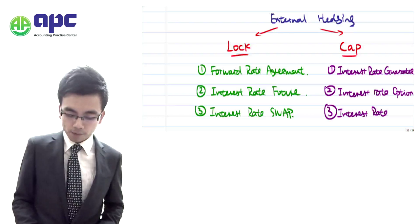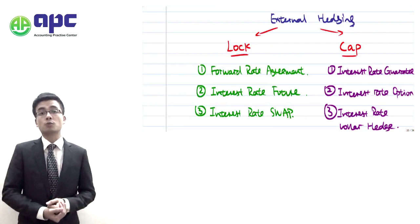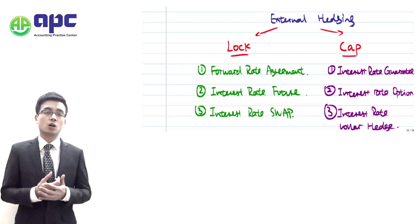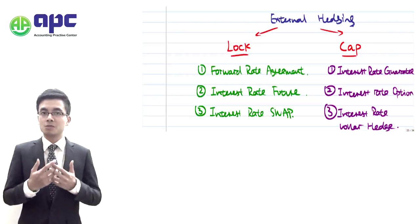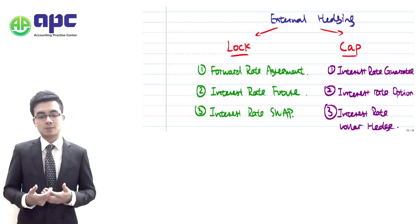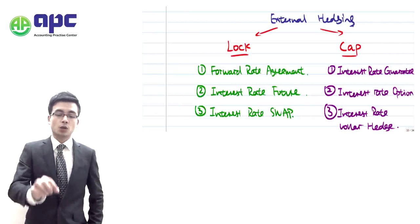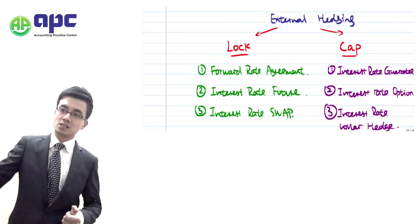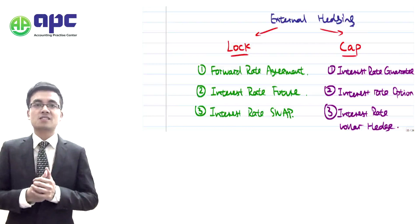Finally, we have the interest rate collar hedge, which is based on the interest rate options contract. With a regular options contract you pay a premium, which can be expensive. With the collar hedge, instead of just paying the premium, you also receive a premium from another party as income to offset against those expenses incurred.